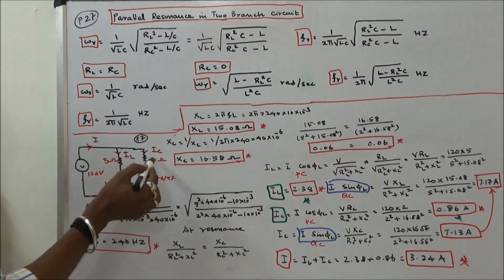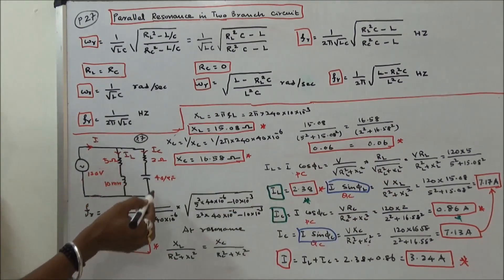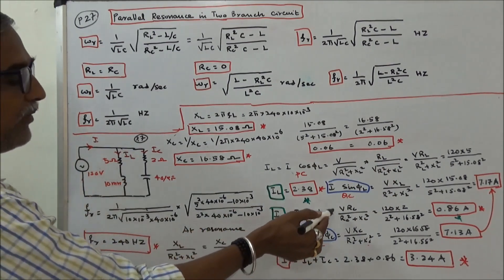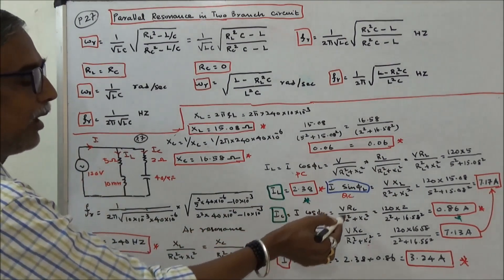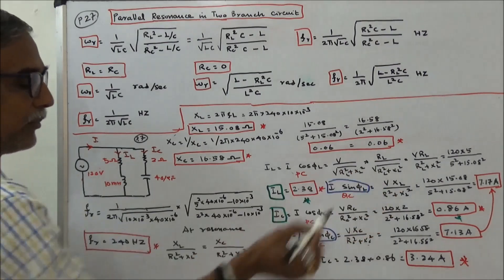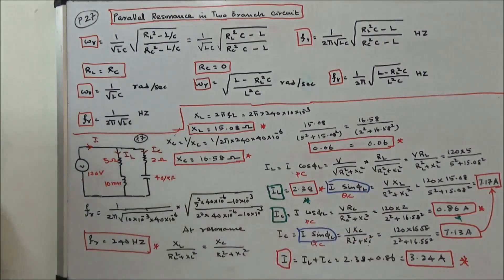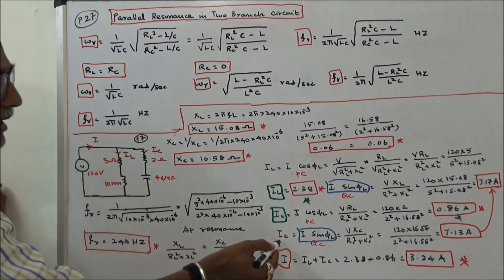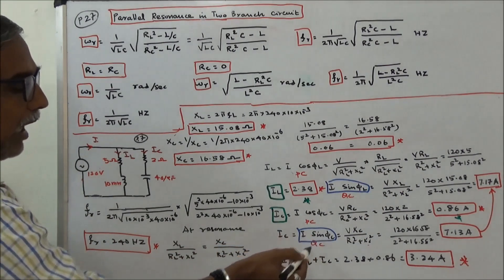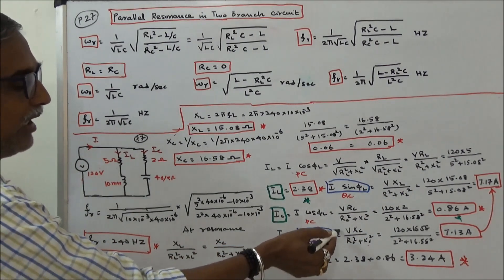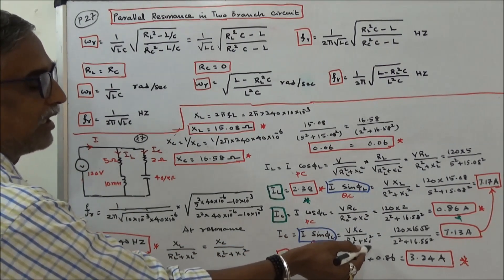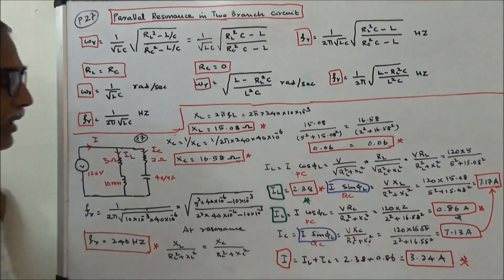Next we calculate the phase component of I_C: I_C (phase) = V·R_C / (R_C² + X_C²) = 0.86 A. The quadrature component of I_C = V·X_C / (R_C² + X_C²) = 7.13 A.